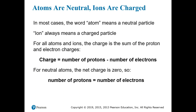When we use the word atom, we generally mean a neutral particle — a fundamental particle of an element that has no charge. If we're talking about a charged particle, we use the word ion. For all atoms and ions, the charge is the sum of the charge of the protons and the charge of the electrons. Since the proton and the electron have equal and opposite charges — proton is plus one and electron is minus one — you can just add up the number of protons and subtract the number of electrons to find the charge.